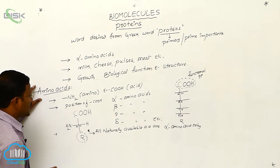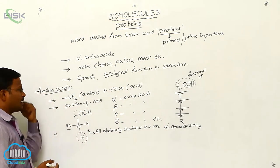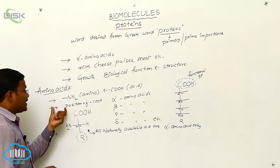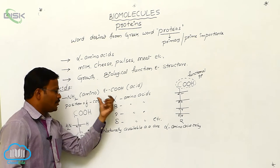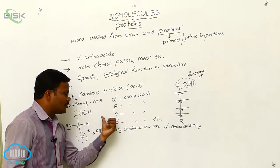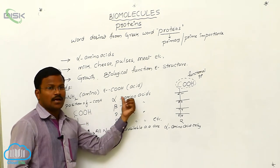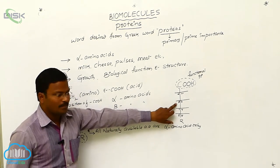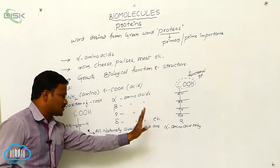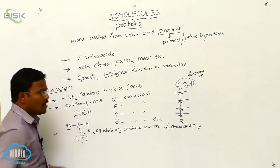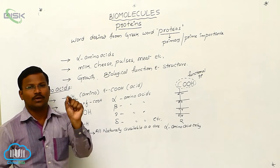The chemical substances which are made up of an amino group and an acid group are called amino acids. Based on the position of the amine group with respect to the acid, it may be present at the alpha, beta, gamma, or delta position. If the amino group is at the alpha position, they are called alpha amino acids; beta position — beta amino acids; gamma — gamma amino acids; delta — delta amino acids. But we must remember the most important statement: all naturally available amino acids are alpha amino acids only.